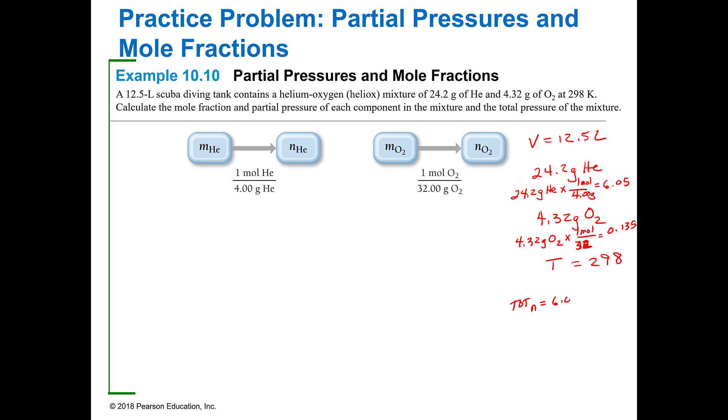The total moles is going to be 6.05 plus 0.135 and that's going to equal 6.185. I need to know that so that I can figure out what the percent or mole fraction is of each one because this problem wants to know the partial pressure of each component, which means both of the gases, and the total pressure in the mixture.